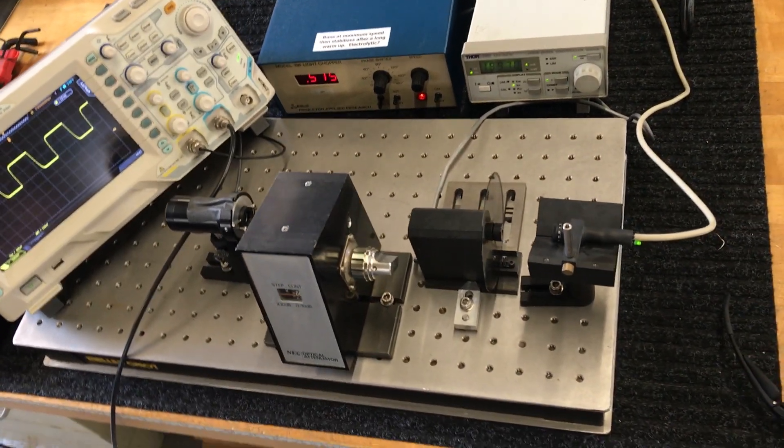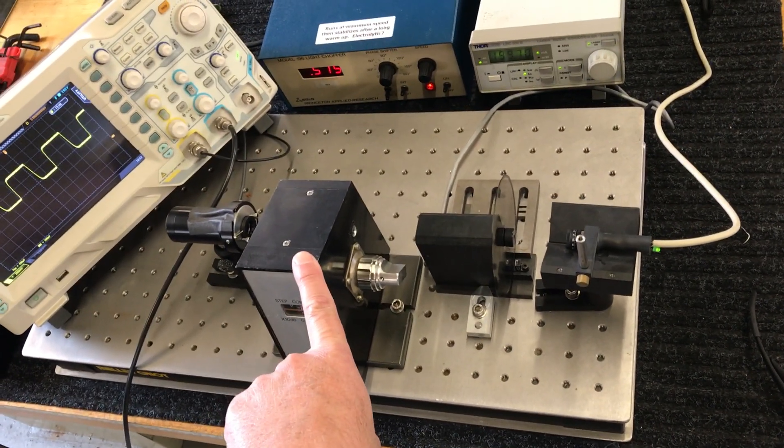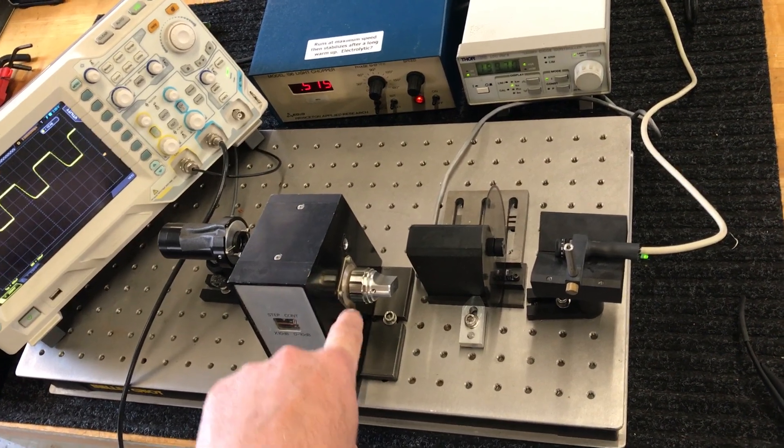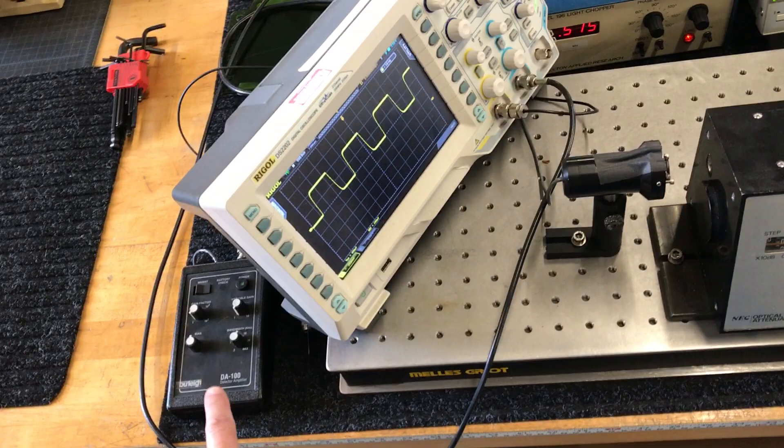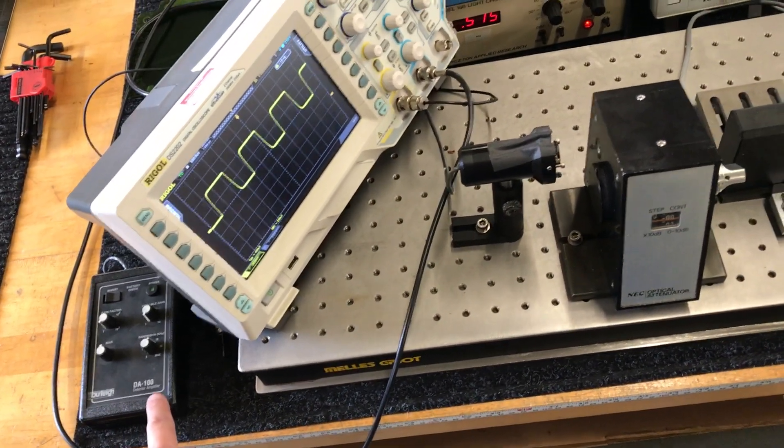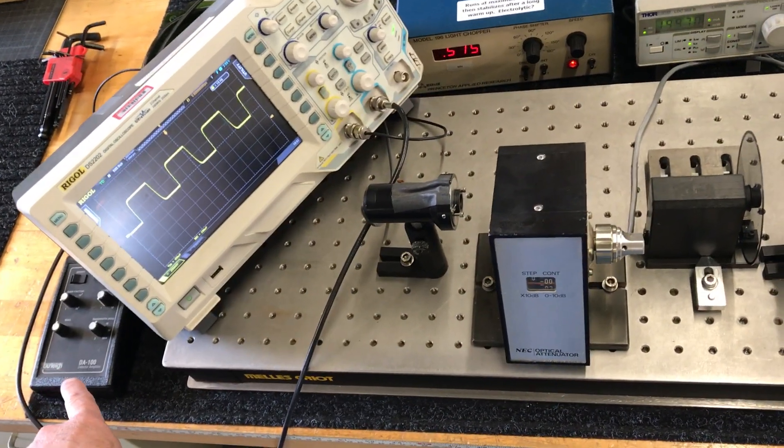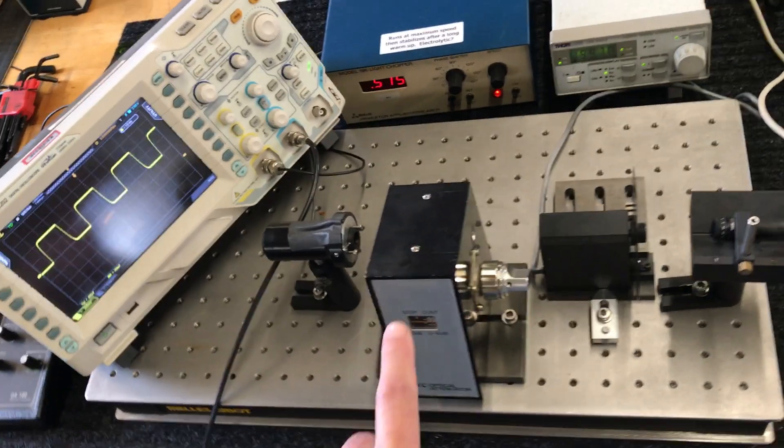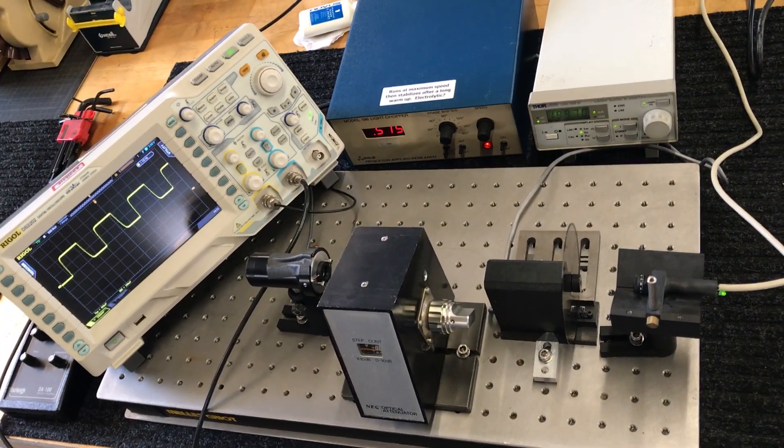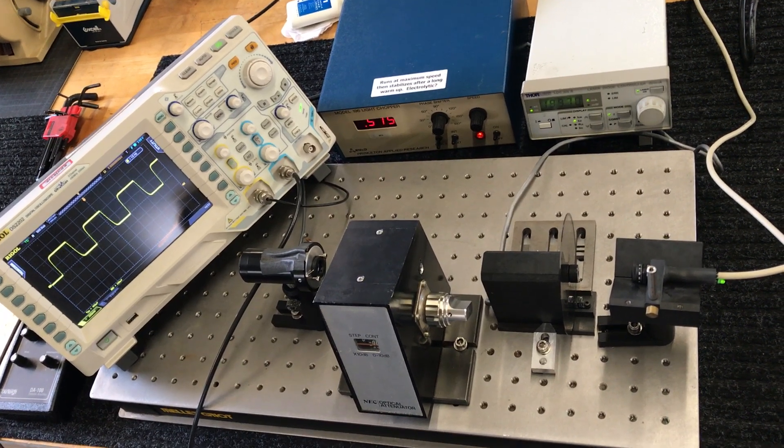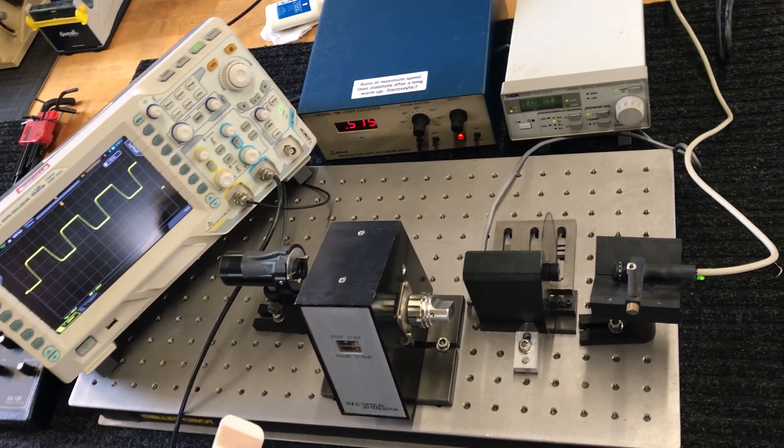But then I also have an attenuator here that's good to 60 dB in steps, as well as a 40 dB worth of gain over here. Between the gain here and the attenuator steps here, I can pretty much accurately tell how many dB of loss a sample that I put in the path will cause.